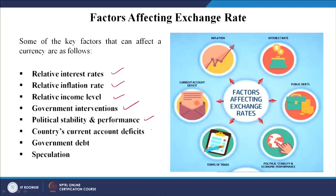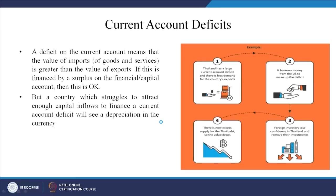Another point we will talk about today is the country's current account deficit. There are basically two kinds of accounts: the current account and the capital account. When there is a deficit in the current account, it could be a deficit or a surplus. If your exports are high, you can be on a surplus; if your imports are more, you can be on a deficit. The deficit on the current account means the value of imports is greater than the value of exports.